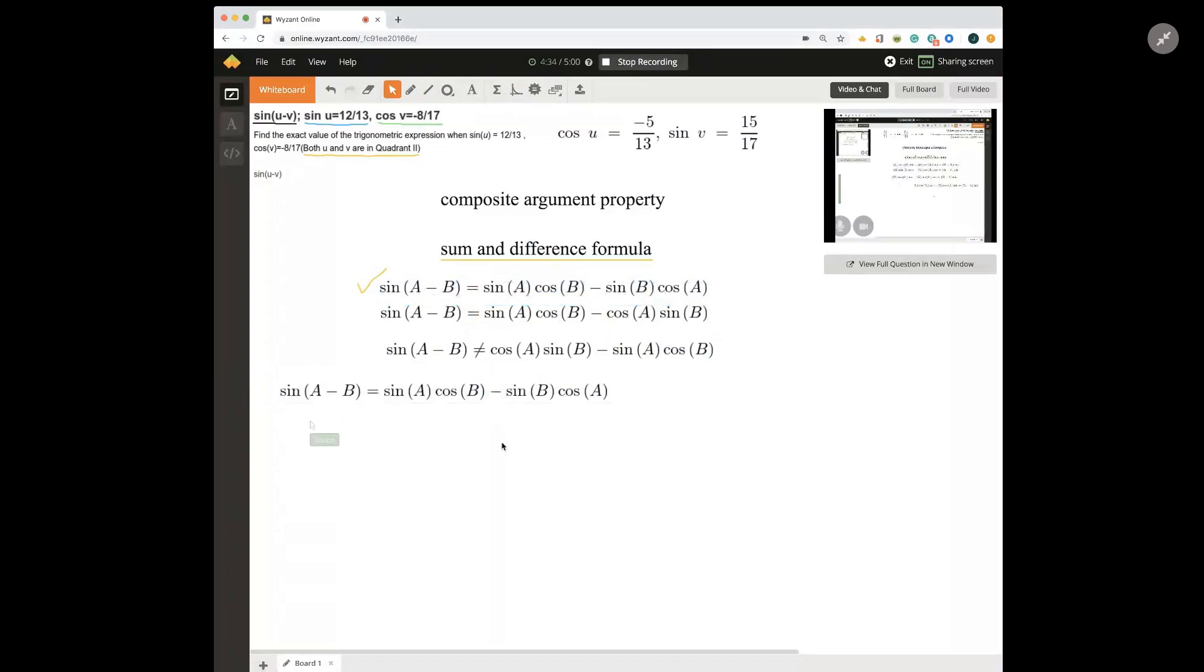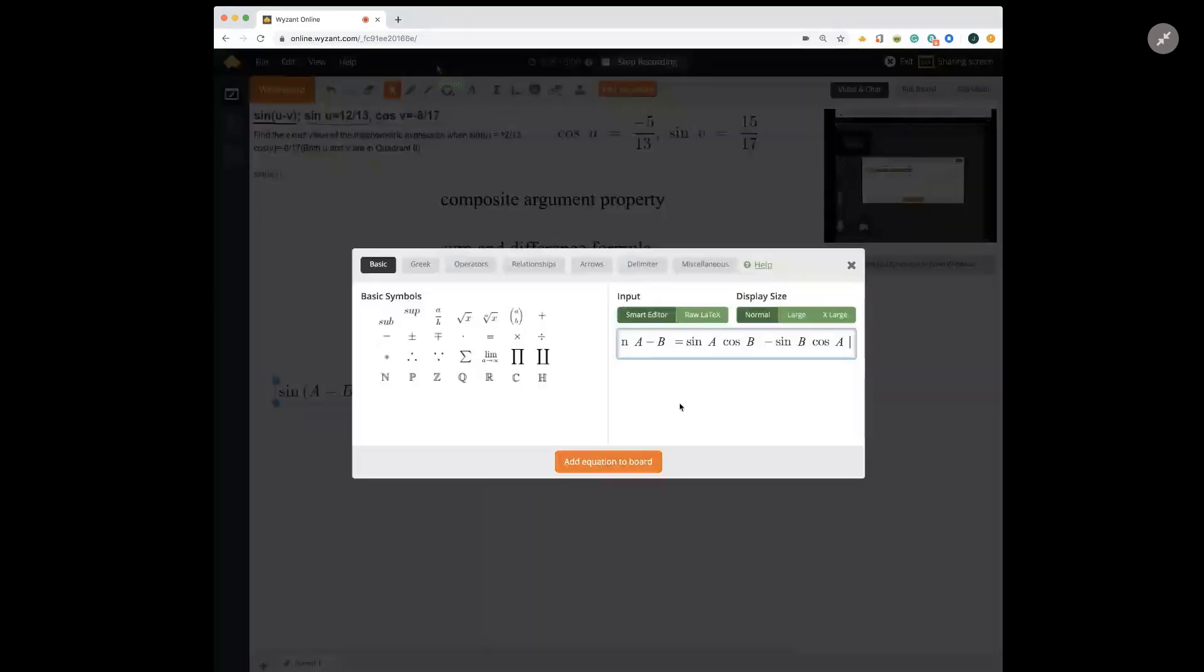And the first thing we're going to do is we're going to substitute in our given values right here. Sine of u is 12 over 13 and cosine of v is negative 8 over 17. So I'm going to edit this equation. And first of all, we're not talking about a and b. We're looking at u and v. And so I'm going to substitute in u wherever I see a and v wherever I see b.